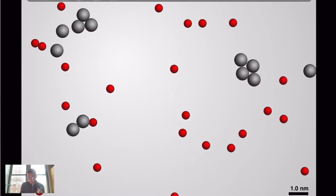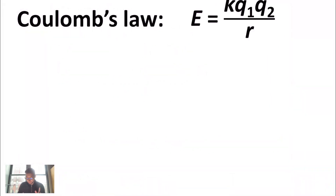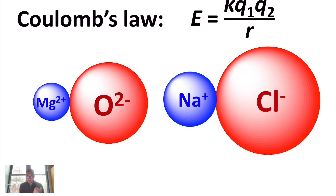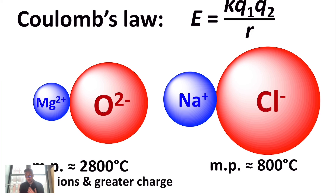This is based on what's called Coulomb's law. We'll talk about it qualitatively in chemistry — you'll learn more in physics. If I compare the ions in magnesium oxide with those in sodium chloride, the magnesium oxide particles have stronger Coulombic attraction because they have smaller ions and the magnitude of the charge is greater.